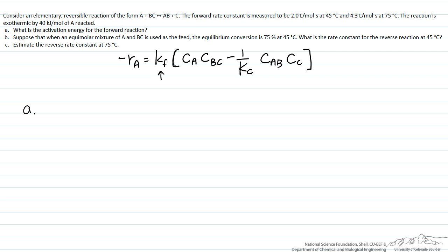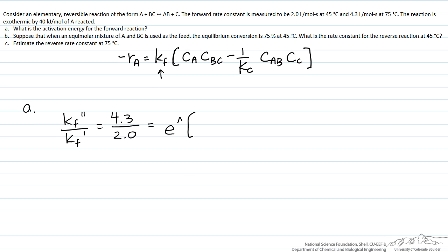To determine an activation energy, we can use the Arrhenius expression. One form is to look at Kf at the higher temperature over Kf at the lower temperature — superscripts 2 and 1 respectively. Kf² is 4.3 liters per mole second, and Kf¹ is 2.0 liters per mole second. The units cancel. This ratio equals the exponential of the forward activation energy Ef over R, times (1/T1 − 1/T2).